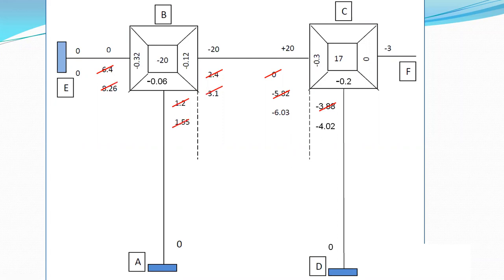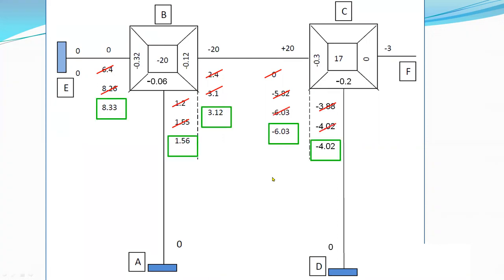We continue with the third cycle: go to joint B, calculate new values; go to joint C, calculate new values in the same way. Once the values in a new cycle are similar to the previous cycle's values, we stop the iteration. The values marked in green are the final values of rotation contribution.